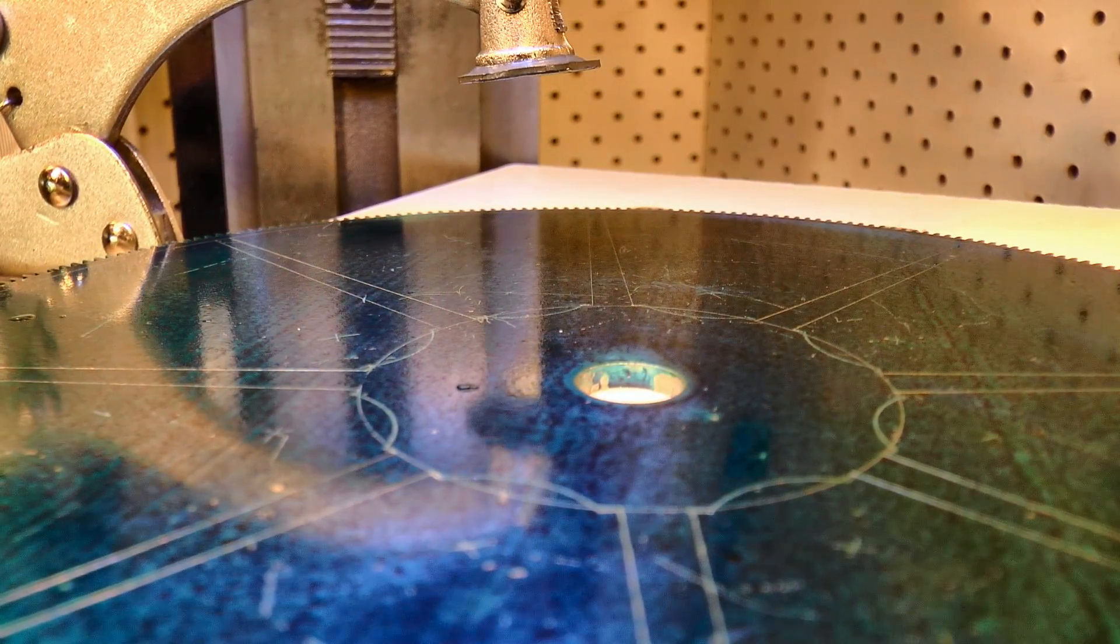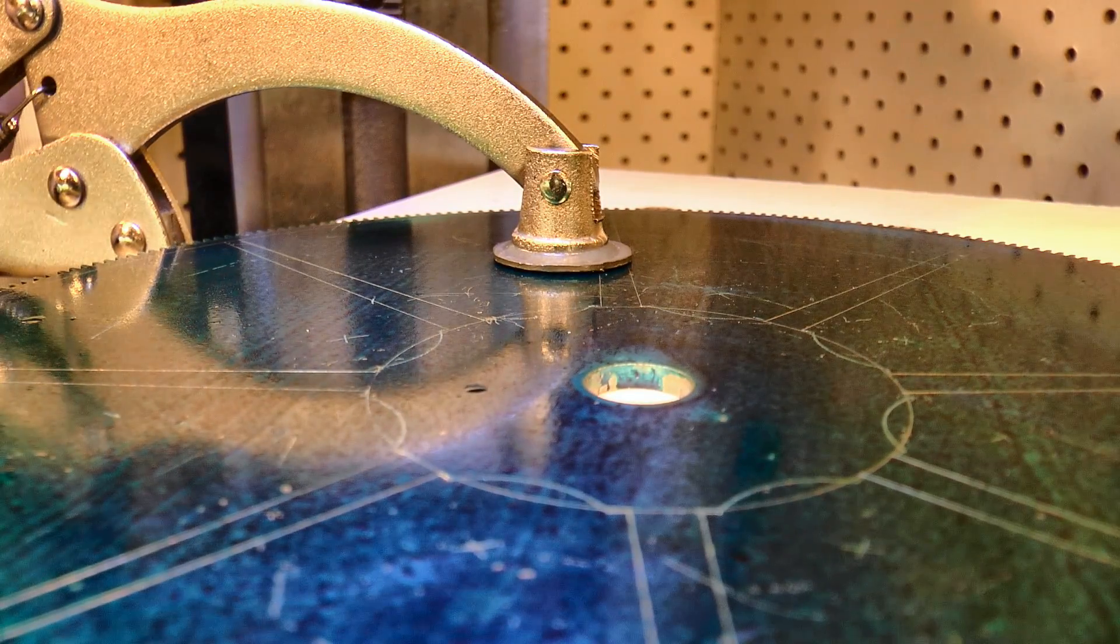The first step was to drill some holes in the waist section of the stock to allow entry of the scroll saw blade.